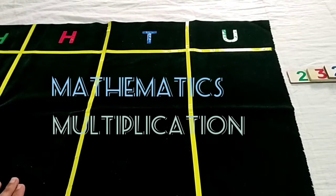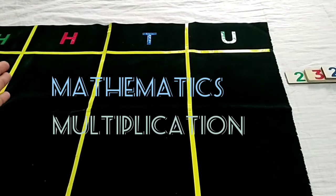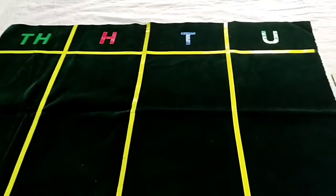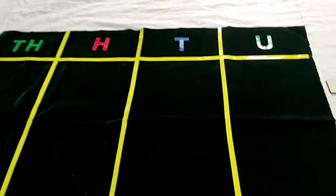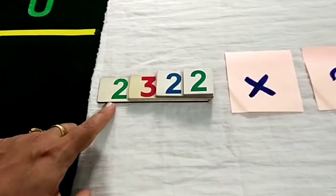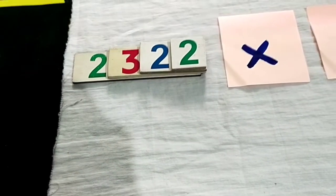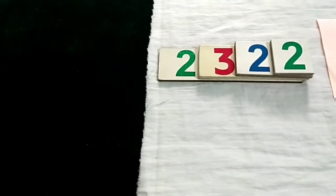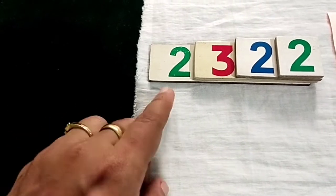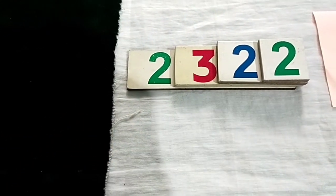This is the felt mat. You can see you need ten hundred thousands — these are the place values. I have placed a number here. This is called the multiplicand. Read the multiplicand: two thousand three hundred twenty two.